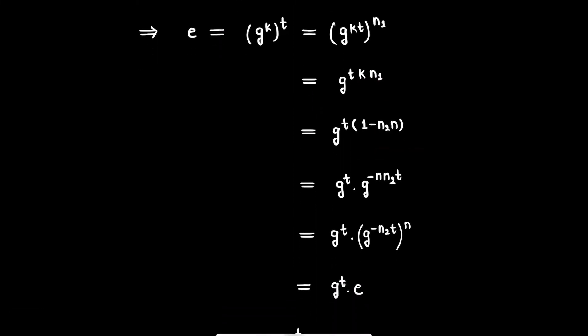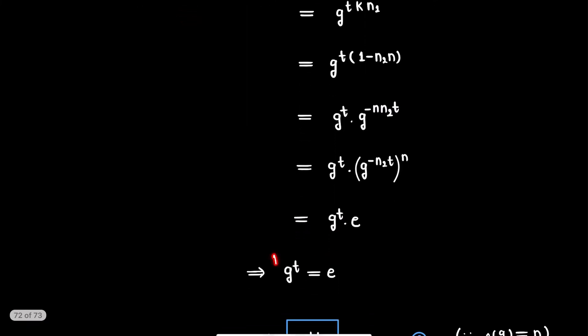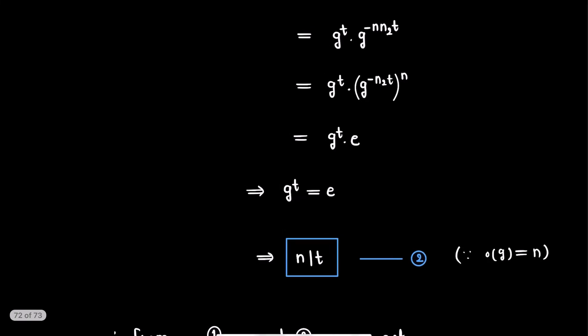Replacing k·n1 by (1 - n2·n), the expression becomes g^t · g^(-n·n2·t), which can be written as g^t · (g^(-n2·t))^n. Since n is the order of group G and g^(-n2·t) is an element of group G, this term equals the identity. Thus we get g^t equals the identity.